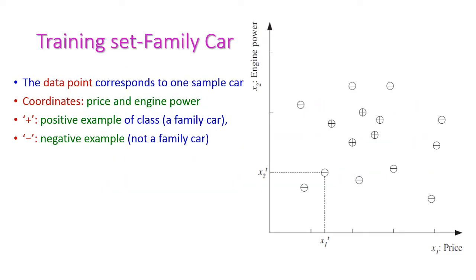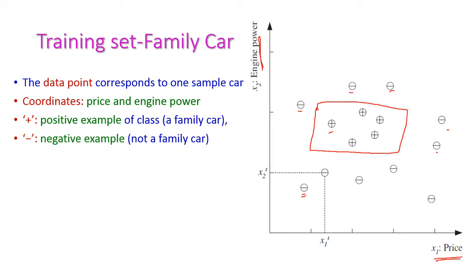Now let us plot a graph for the family car example. The x-coordinate represents price and the y-coordinate represents engine power. Based on the values of price and engine power, the cars are plotted. The plus signs are positive samples — these are all family cars — and all the other cars are not family cars.